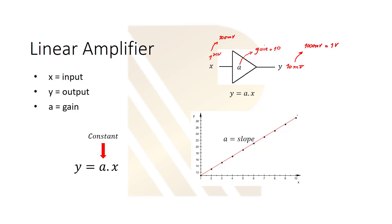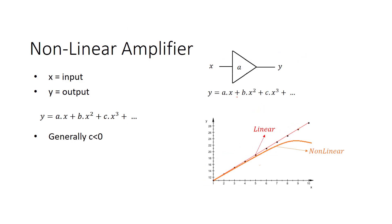Now let's see what happens in the real world with a nonlinear amplifier. In addition to the linear term, at the output we will have extra terms: B times x squared, and C times x cubed. This is the output of a nonlinear amplifier. We always want to get rid of these extra terms. The goal in design is to have B equal to 0 and C equal to 0. We consider only these first three terms because higher-order terms become negligible. The first term is our linear gain; the other two cause nonlinearity.